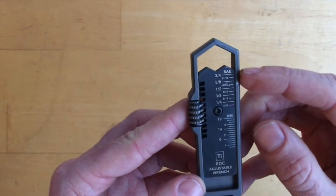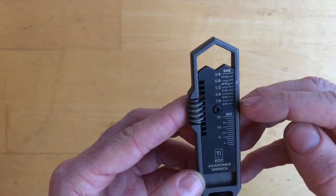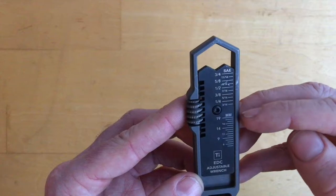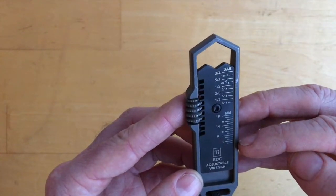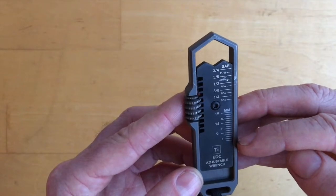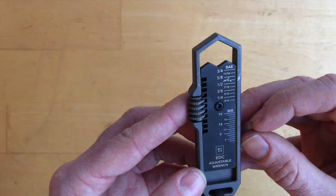...imperial numbers, we've got all the way from three quarters, the largest setting, down to three sixteenths. And if we look at metric, 19 millimeters down to potentially five. It says six as the last number but there's another notch—six, seven, eight—so I'd say five. It goes down to five millimeters.